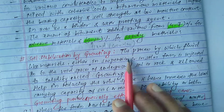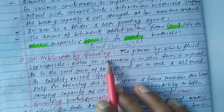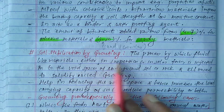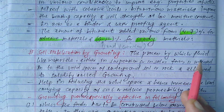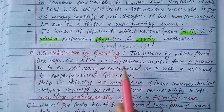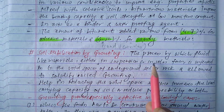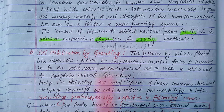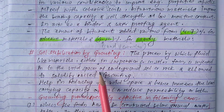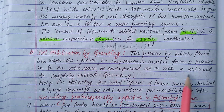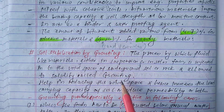Grouting is the process by which fluid-like materials, either in suspension or in solution form, is injected into void spaces of underground soil or rock and allowed to solidify. This process is called grouting.